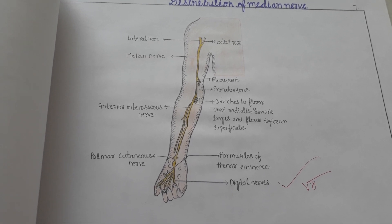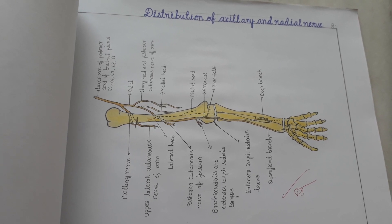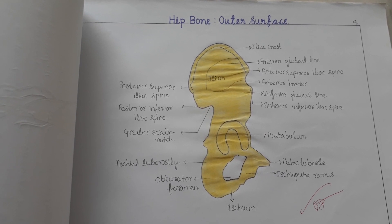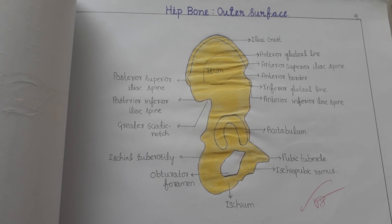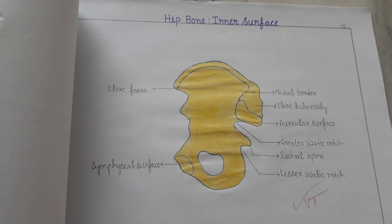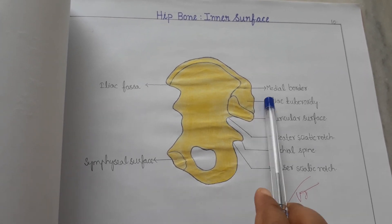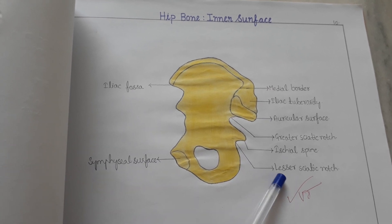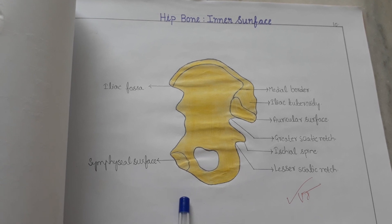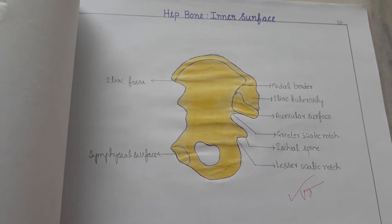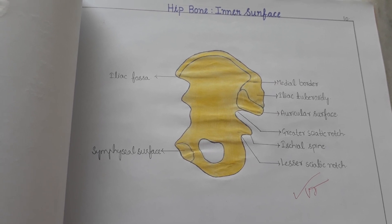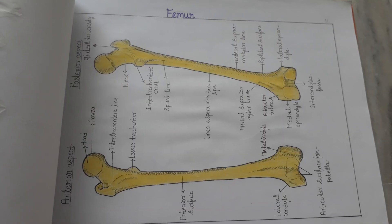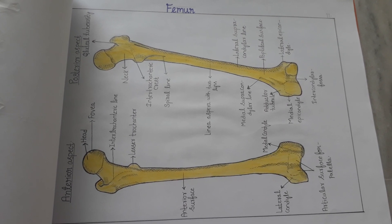This is the distribution of the axillary and radial nerve. This is the hip bone — outer surface and inner surface. Whatever names are given here, like iliac spine, iliac fossa, and lesser sciatic notch, you have to answer for that in spotters. This is the female pelvis — the largest bone.